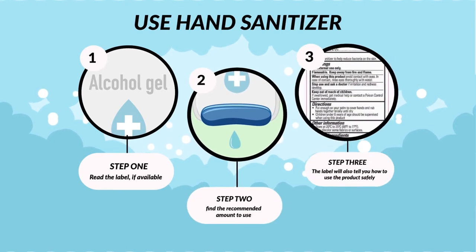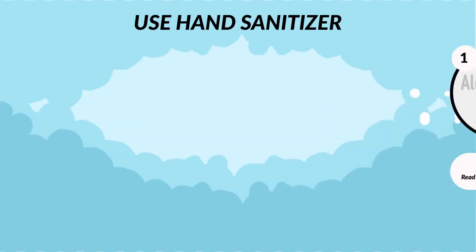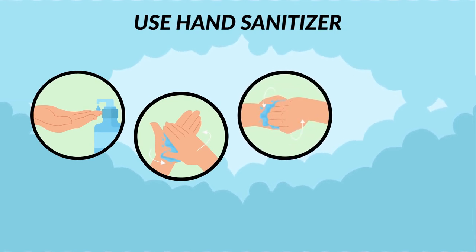The label will also tell you how to use the product safely. Apply the hand sanitizer to the palm of your hands. Rub hands together, covering all parts of the hands and fingers until dry. Add more if needed.